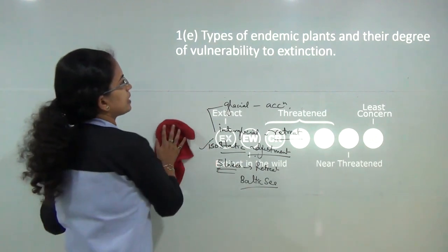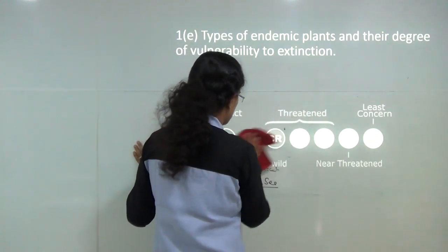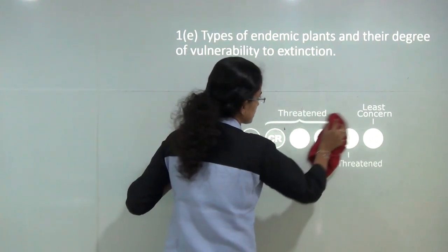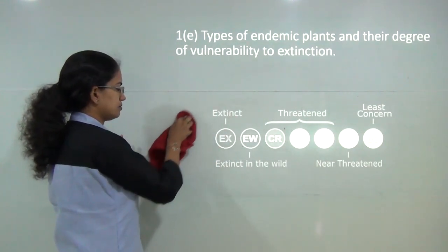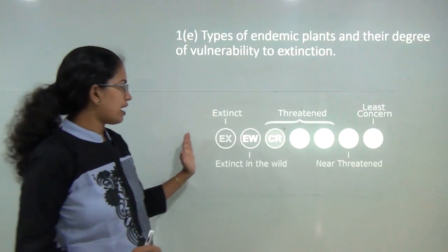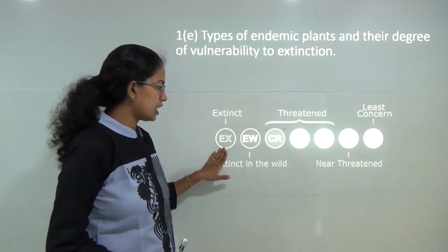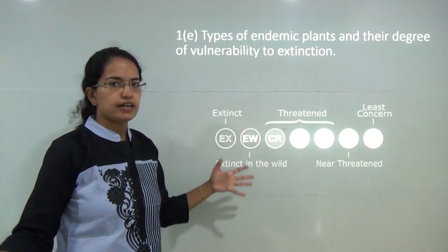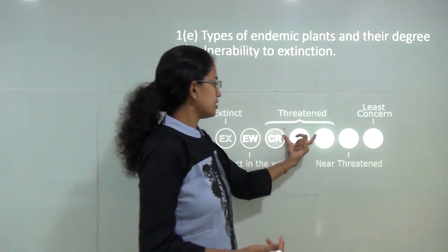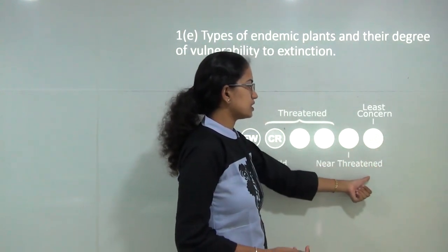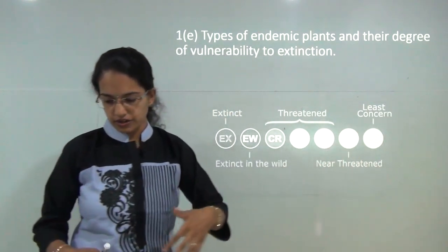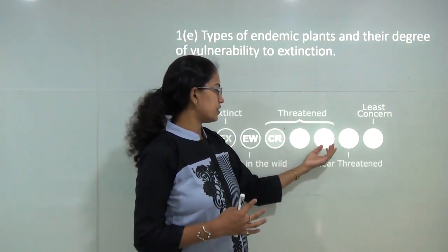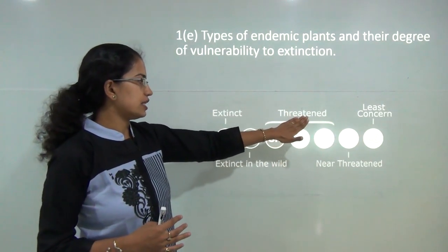The next question is types of endemic plants and their degree of vulnerability to extinction. When discussing endemic plants, first explain the IUCN classification: EX (Extinct), EW (Extinct in the Wild — not present in wild but seen in preserved areas), then Threatened, Near Threatened, and Least Concerned. You also have Endangered, Vulnerable, and Critically Endangered categories.